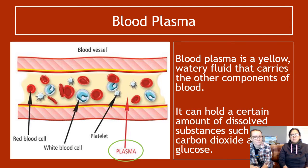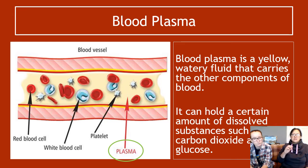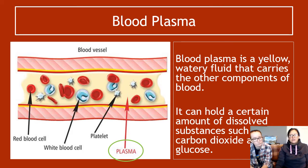Blood plasma is a yellow, watery-ish fluid that carries the other components of the blood — it is the liquid part of blood. Without plasma, red blood cells, white blood cells, and platelets would just clog our arteries. It can hold dissolved substances like carbon dioxide and glucose, and that's the main way those components are carried through your body.